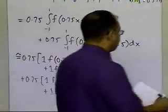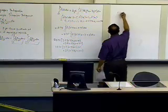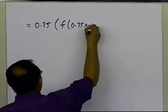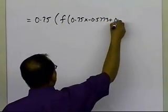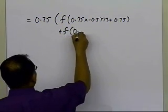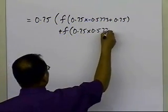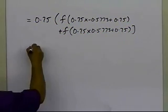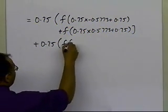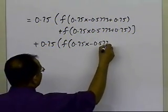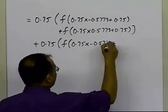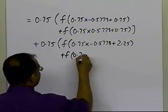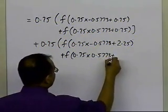So now we're going to substitute these values for x1 and x2 in here. We get 0.75 times the value of the function at 0.75 times minus 0.5773 plus 0.75, plus f times 0.75 times 0.5773 plus 0.75. So that takes care of the first integral. The second integral will be taken care of again by substituting the values of x1 and x2 in the argument of the function, which is 2.25, plus the value of the function at 0.75 times 0.5773 plus 2.25.